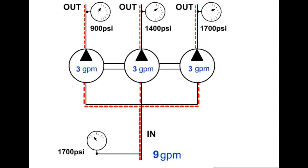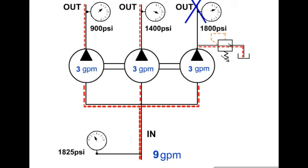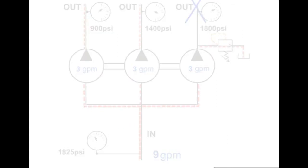If one of the output flows becomes blocked, all of the output flows will be blocked. Pressure intensifies in the circuit that is initially blocked. A relief valve placed in the circuit downstream of a proportional flow divider will prevent pressure intensification.